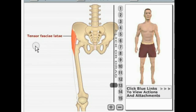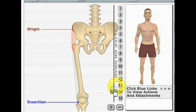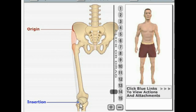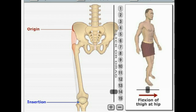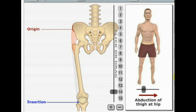Next is tensor fascia latae. The origin is the iliac crest, and the insertion goes all the way down to the tibia by way of the iliotibial tract, or IT tract. The actions it performs are abduction of the femur, flexion of the femur, and medial rotation of the thigh.